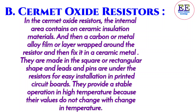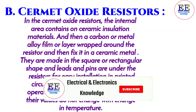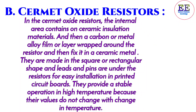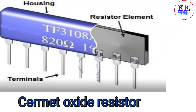Cermet oxide resistors. In cermet oxide resistors, the internal area contains ceramic insulation material, and then a carbon or metal alloy film or layer is wrapped around the resistor and fixed in a ceramic metal. They are made in square or rectangular shape with leads and pins on the underside for easy installation in printed circuit boards. They provide stable operation at high temperatures because their values do not change with changes in temperature.